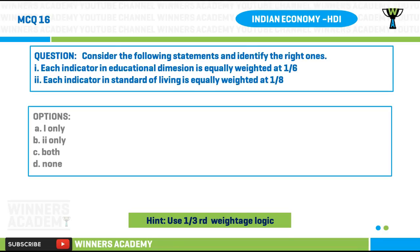Question number sixteen: consider the following statements and identify the right ones. Statement 1: each indicator in the educational dimension is equally weighted at one-sixth. Statement 2: each indicator in standard of living is equally weighted at one-eighth. Options: A) statement 1 only, B) statement 2 only, C) both statements, D) none of the statements. Hint: in Lesson 2 Part 4, all three measures of HDI have an equal weightage of one-third — use that logic to answer.